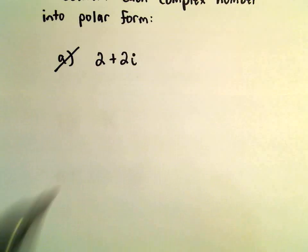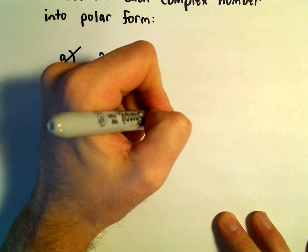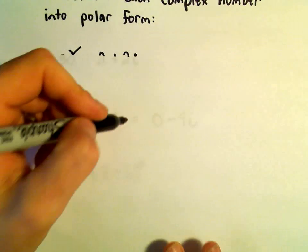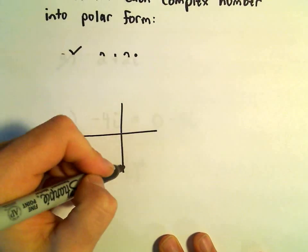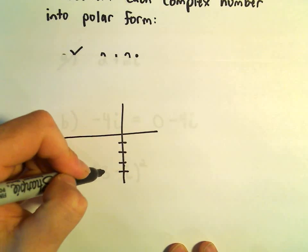So if we graph negative 4i, you can think about that as being 0 minus 4i if you want to see the real part in there. So all we're doing in this case is the real part is 0, so we're just going down to negative 4.